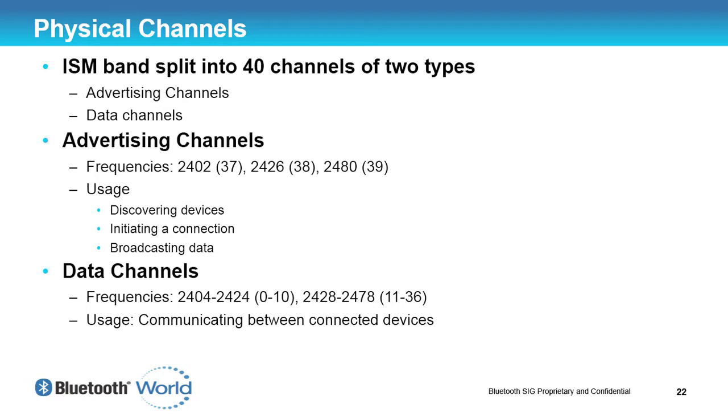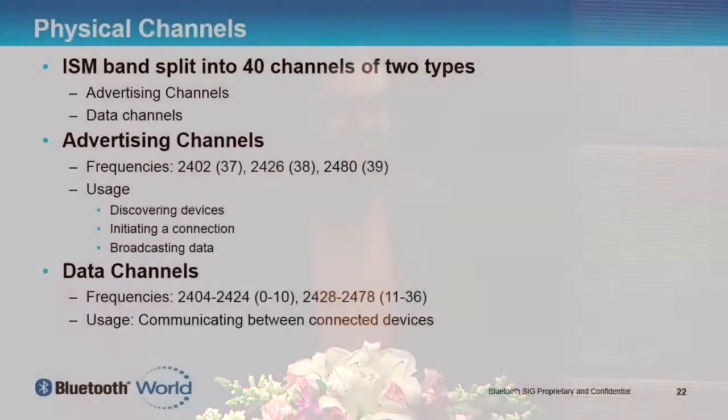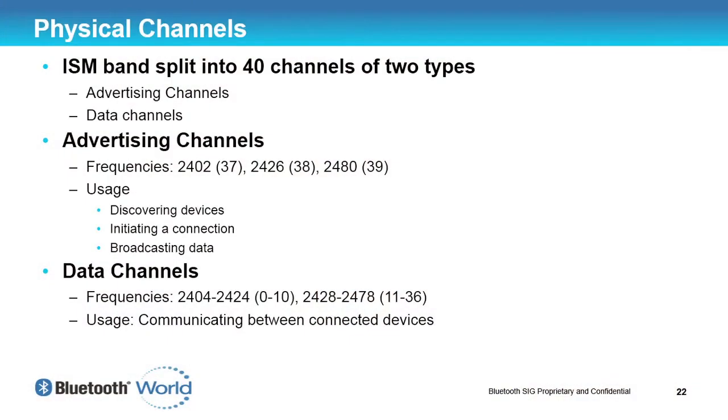We were a little bit more clever than that. We've got two types of channel: an advertising channel and a data channel. An advertising channel is three fixed frequencies, strategically placed around the ISM band to reduce interference with IEEE 802.11. Those frequencies are 2,402 megahertz, 2,426 megahertz, and 2,480 megahertz.